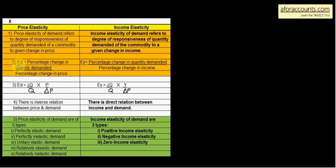Point number two: ED, elasticity of demand, is equal to percentage change in quantity demanded divided by percentage change in price. Income elasticity, that is EY — where Y is income — is equal to percentage change in quantity demanded divided by percentage change in income. In the numerator we always have percentage change in quantity demanded; the denominator changes — income for income elasticity, price for price elasticity. The formula: ED = delta Q upon Q × P upon delta P. EY = delta Q upon Q × Y upon delta Y, where Y means income.